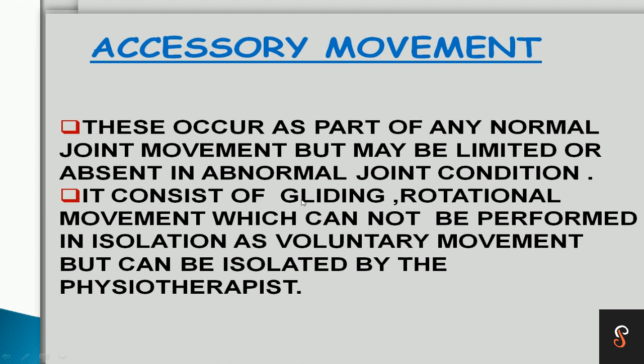Accessory movement includes roll, spin, gliding, and rotational types of movements. Accessory movement is examined passively to determine the range of motion of the joint.